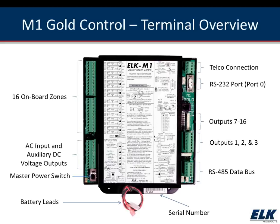Jumping into the board layout — this is exactly what the M1 control panel looks like out of the box. One thing that stands out is that instead of referring to an instruction manual, you've got nice connection diagrams right there on the board. At the bottom of the board you'll see battery leads, and to the right of that is the serial number — we're going to need that serial number later to connect to the panel using the programming software.